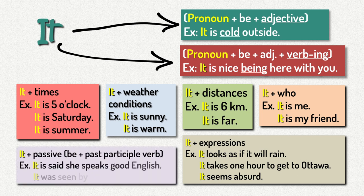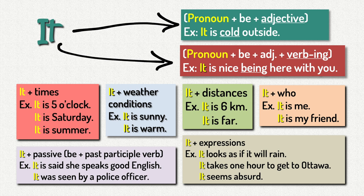It can also be used for the passive. The passive is the verb to be, plus a past participle verb, like in these examples. It is said she speaks good English. It was seen by a police officer.